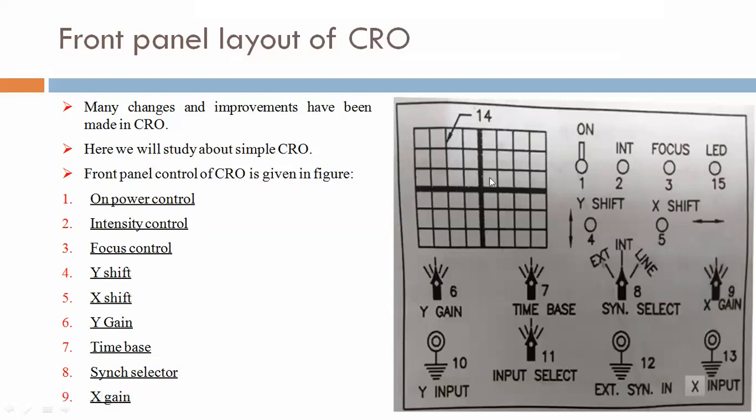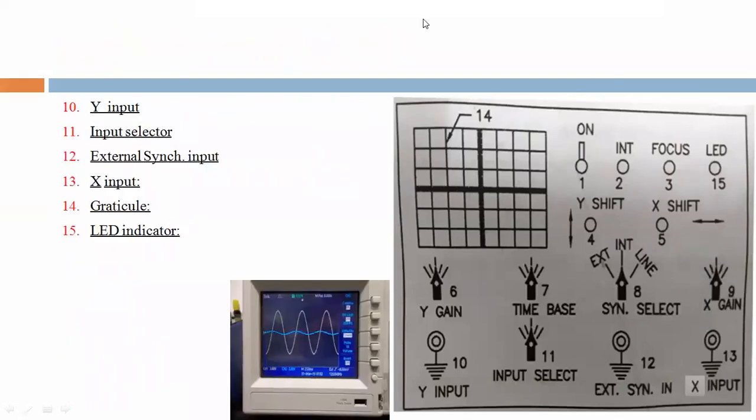Ten, Y-Input. Here, Y-Input is there. In figure, we are saying. Eleven, input selector. Here, input selector. Twelve, external sync input. Here, twelve number, external sync input is there. Thirteen, X-Input. So here, thirteen point, it is X-Input. Fourteen, Graticule. So here, Graticule is there. And here in figure also, that is displayed. And fifteen, LED indicator. So here, this is LED indicator.